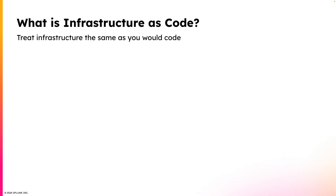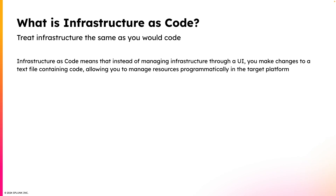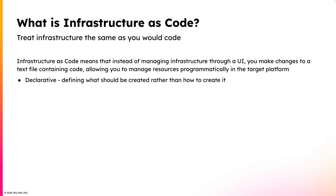So then what is infrastructure as code? Infrastructure as code means that you treat infrastructure the same way as you would code. So instead of managing infrastructure through a UI like the AWS console, you make changes to a text file that contains code and then you can programmatically manage and create resources in the target platform. There are a couple of very important characteristics about infrastructure as code. Number one being that infrastructure as code is declarative, and that means that you're defining what should be created rather than how to create it.